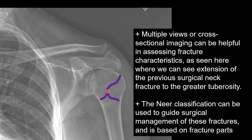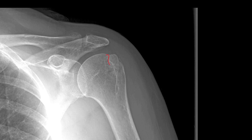Multiple views and cross-sectional imaging can be helpful in the classification of these fractures. One system we can use is the Neer classification system, which guides surgical management. This system is based not on fracture lines but on fracture parts — a part is considered separate if it has at least one centimeter of displacement or 45 degrees of angulation. A minimally displaced fracture like this would be a one-part fracture. That greater tubercle fracture we saw earlier would also be one-part, but if displaced more than one centimeter, it would be a two-part fracture.